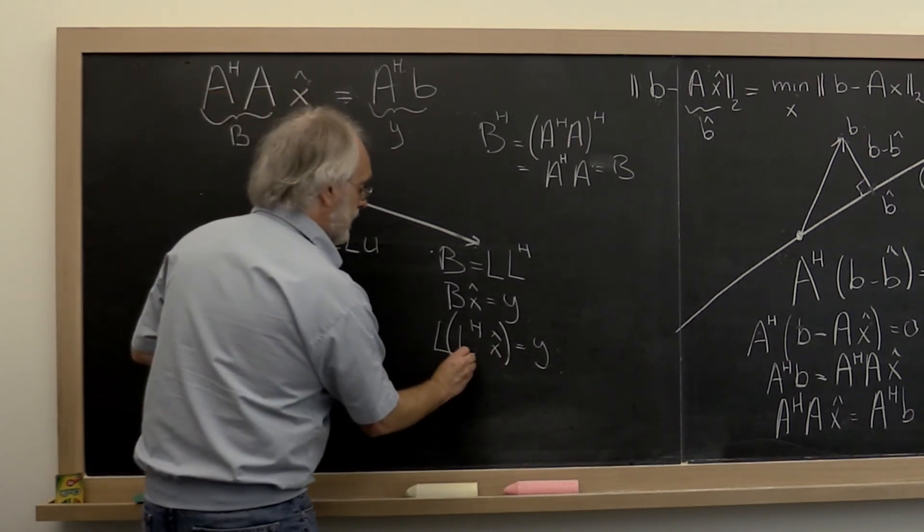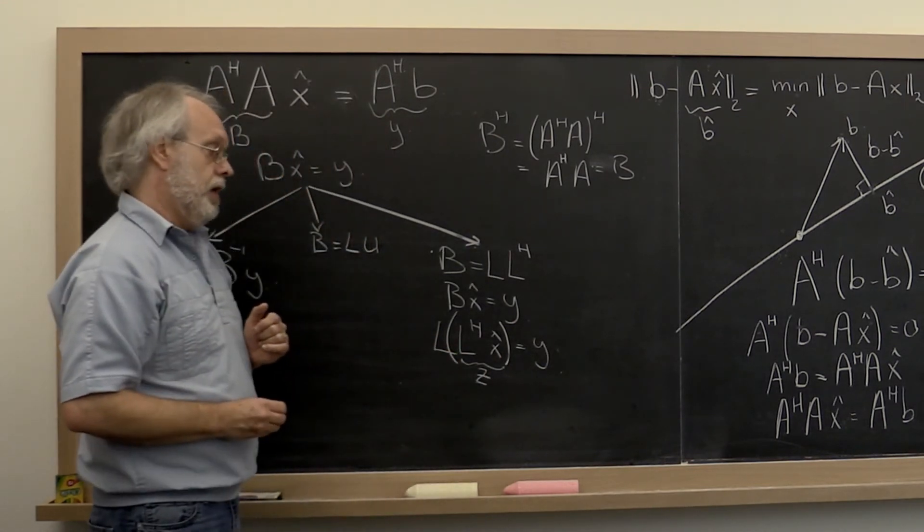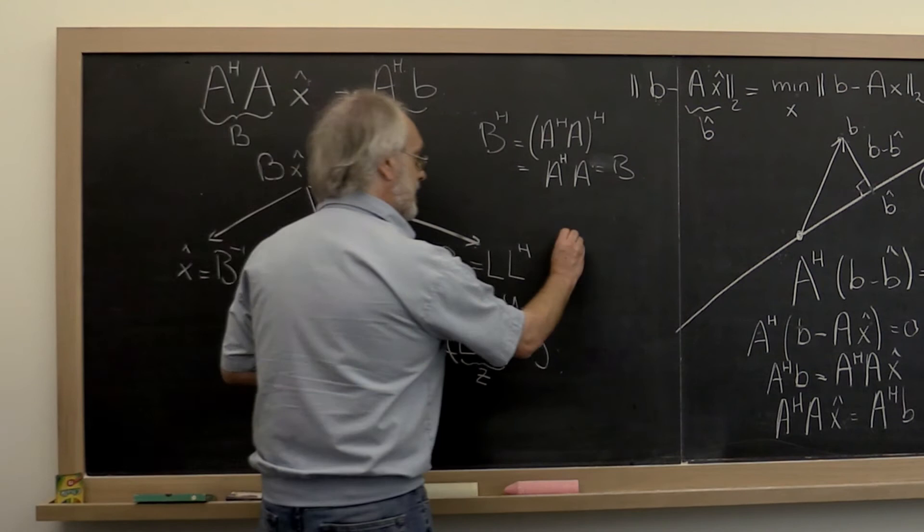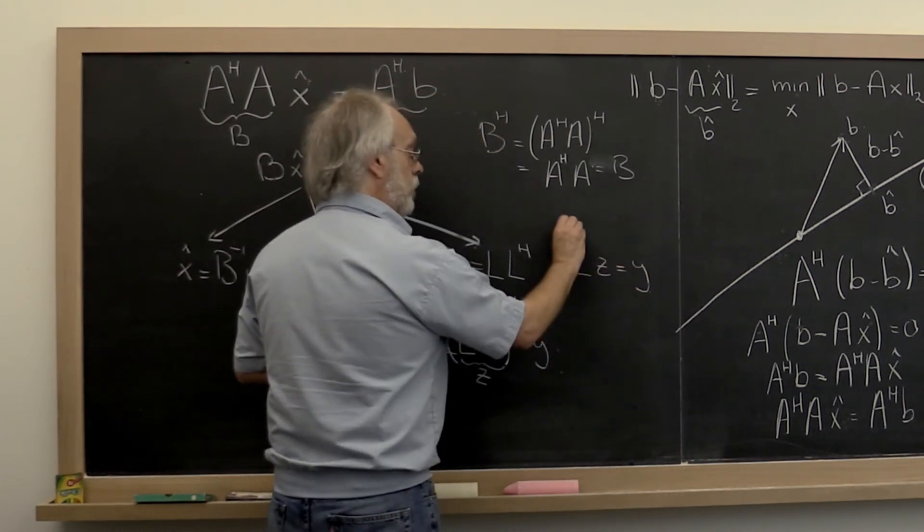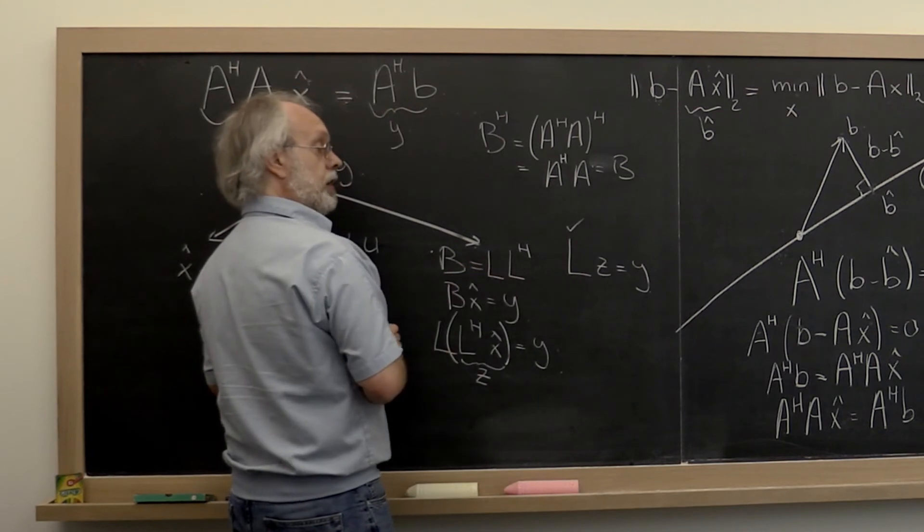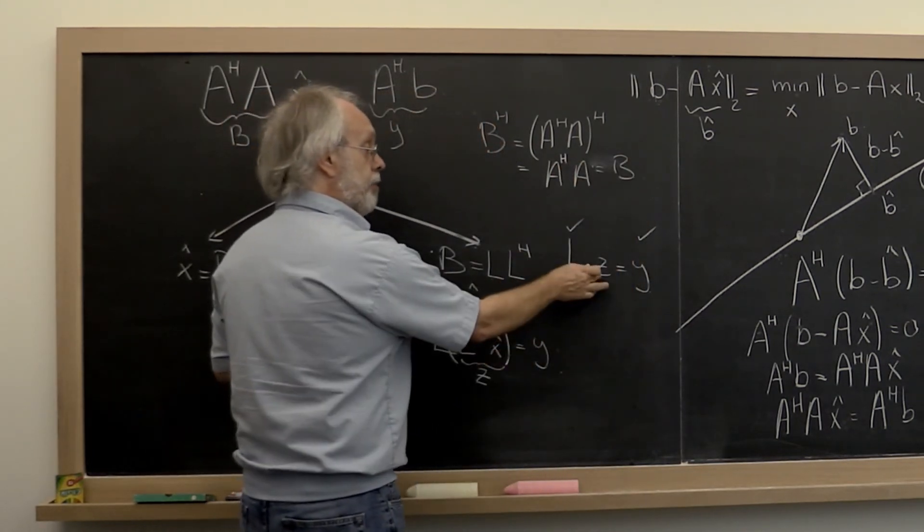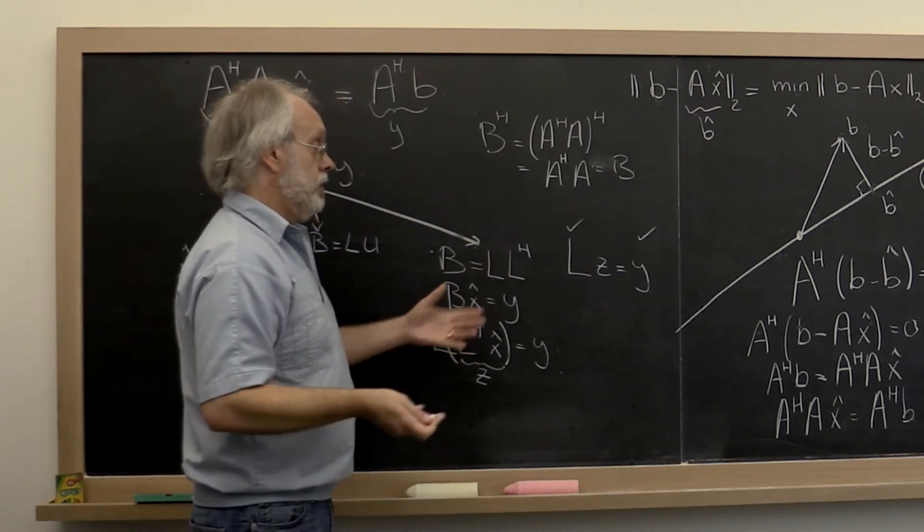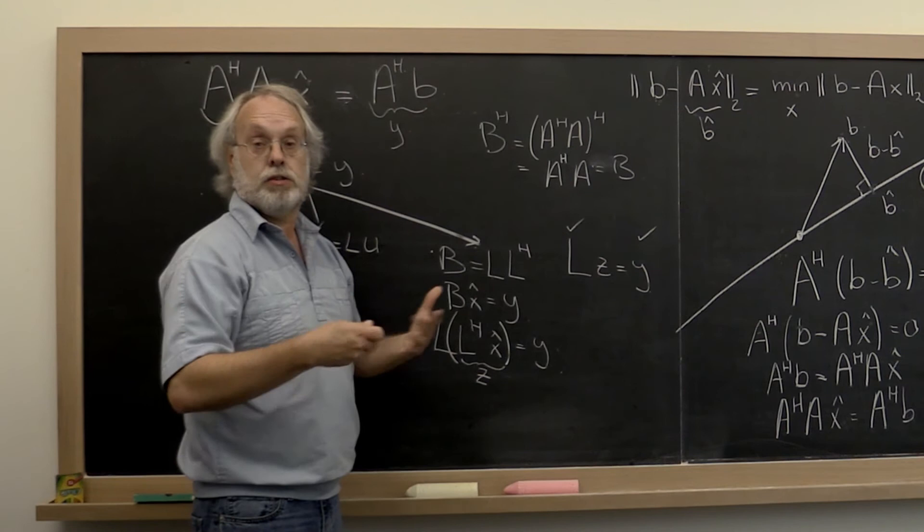If we then say, well, we don't know what this vector is, but we can call it Z. Then what you notice is that L times Z is equal to Y. But you know what L is if you've computed the Cholesky factorization. And you know what Y is. And therefore you can now solve with this lower triangular matrix. That's solving a lower triangular system. That's relatively easy.